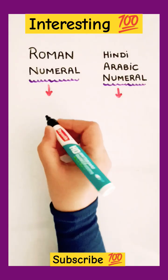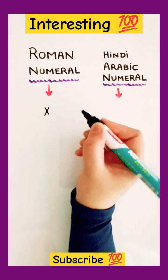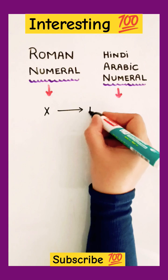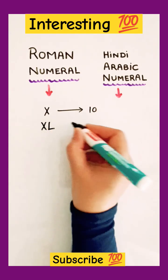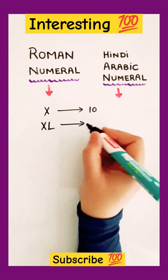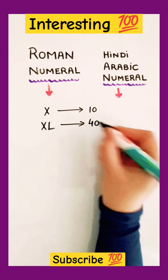So, the first one I am writing simply X and that means it is 10. If I write XL together, so what is the meaning of this? This is 40.